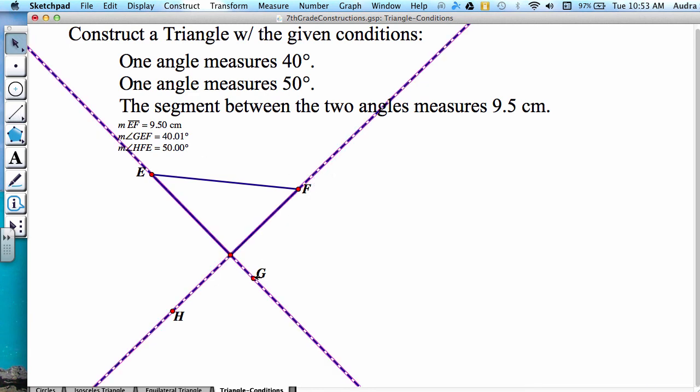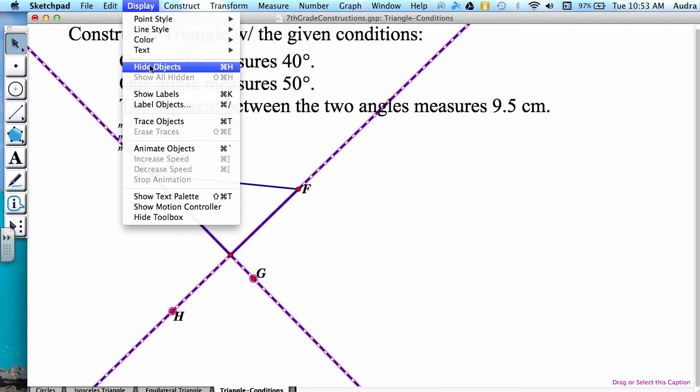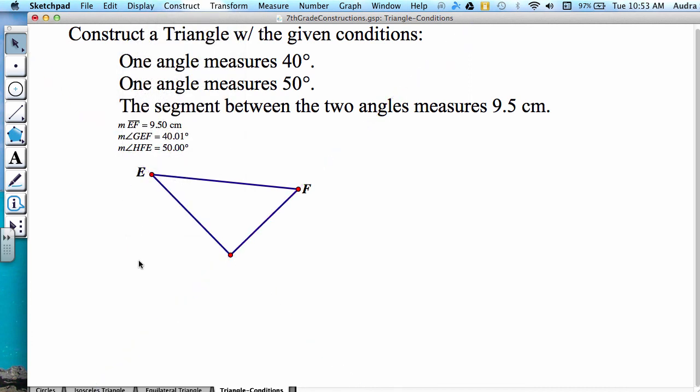And what I can do is highlight the additional points and lines that were created and go to display, hide objects, or command H or control H.